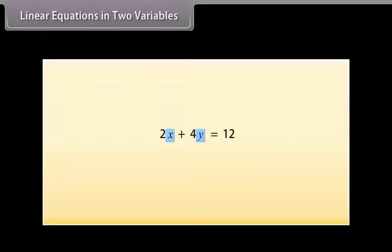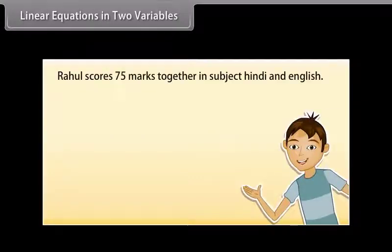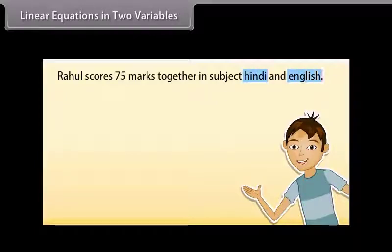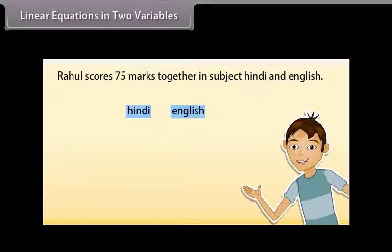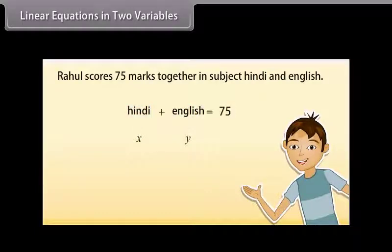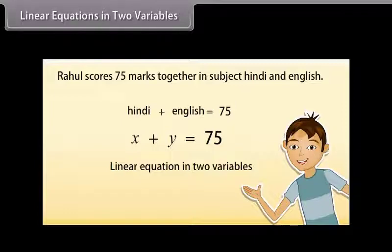Let's take an example. Rahul scores 75 marks together in subject Hindi and English. How can we express this information in the form of an equation? The marks of neither subject are known — that is, there are two unknown quantities. Let us use X and Y to denote them. The marks scored in Hindi is X and the marks scored in English is Y. So X plus Y is equal to 75 is the required equation. This is an example of a linear equation in two variables.